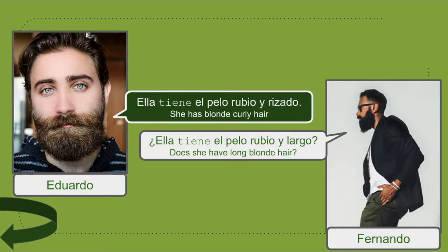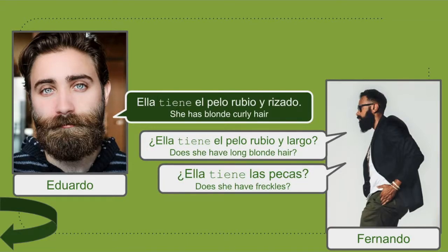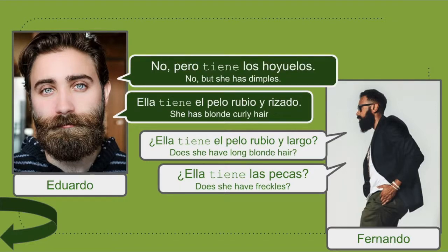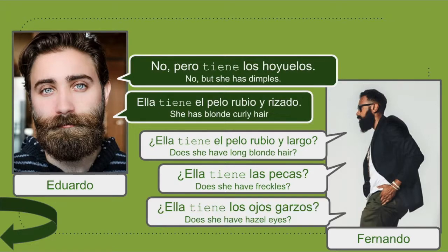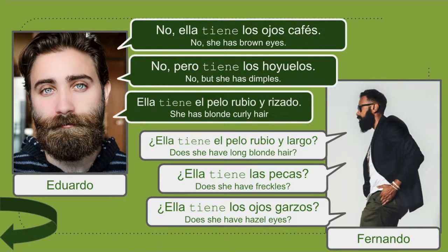¿Ella tiene las pecas? No, pero tiene los hoyuelos. ¿Ella tiene los ojos garzos? No, ella tiene los ojos cafés. Those are some sentences structured with ella tiene.